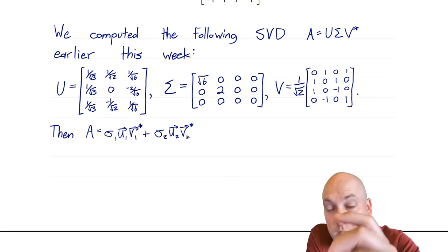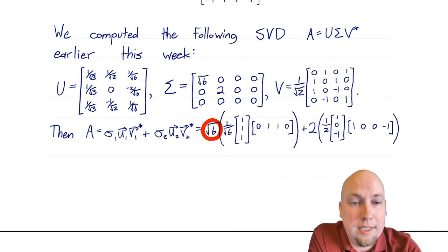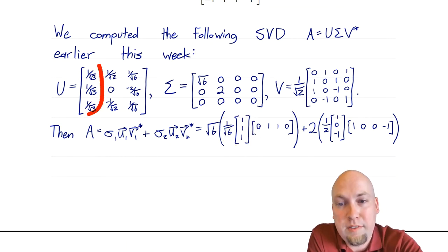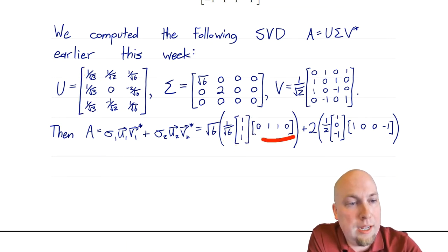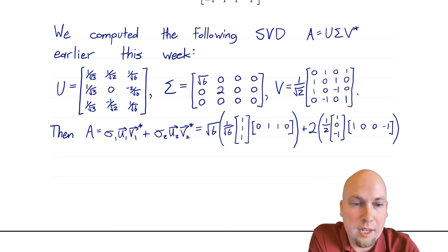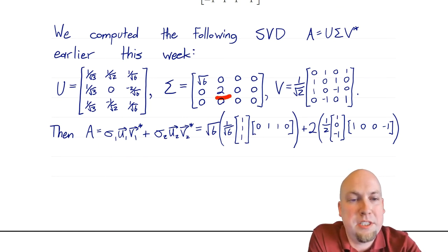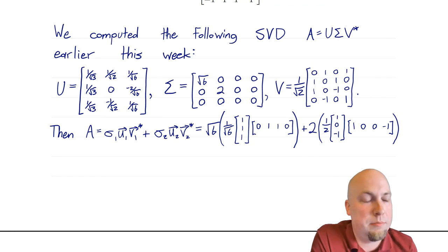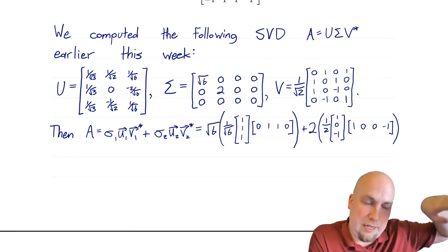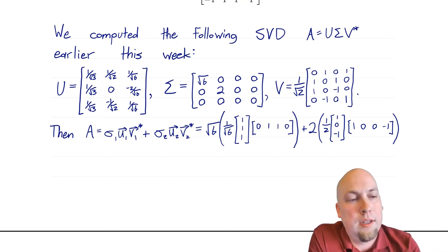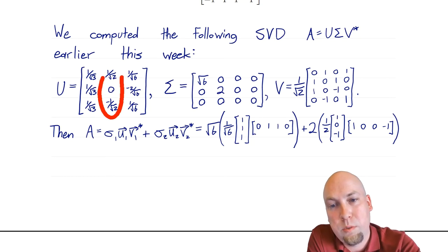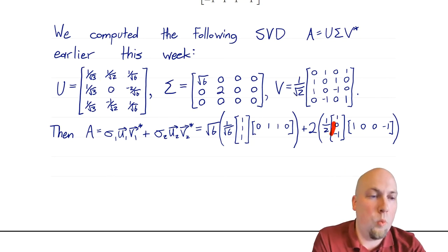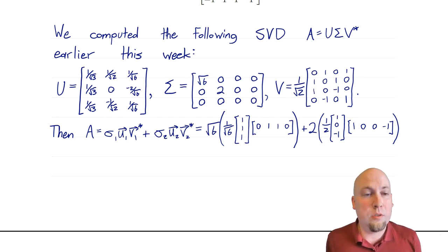So here's our orthogonal rank-1 sum decomposition. σ₁ is √6. The first piece comes from the first column of U — (1/√3)(1, 1, 1) — times the first column of V starred — (1/√2)(0, 1, 1, 0). The 1/√6 out front is just 1/√3 times 1/√2. Then the second term has σ₂ = 2 out in front, times the second column of U — (1, 0, -1) — and the second column of V starred as a row vector — (1, 0, 0, -1). The 1/2 out front comes from (1/√2)(1/√2). And that's our orthogonal rank-1 sum decomposition.